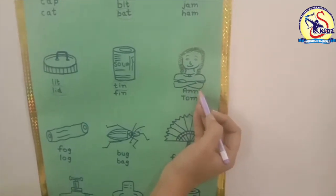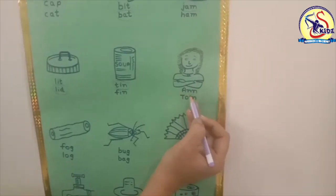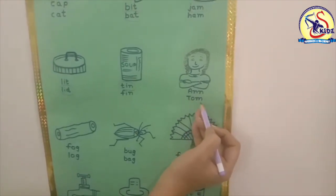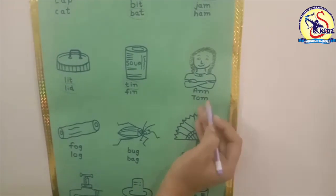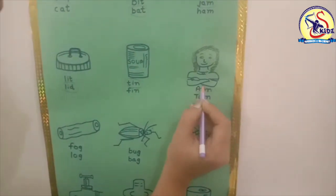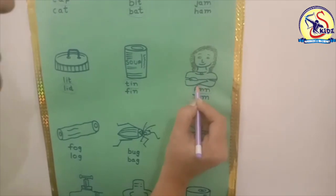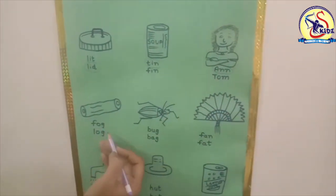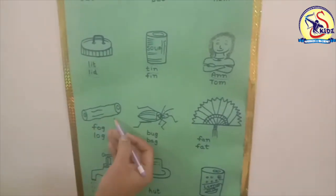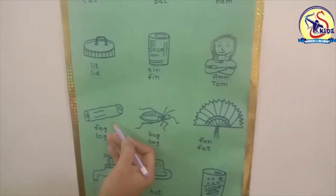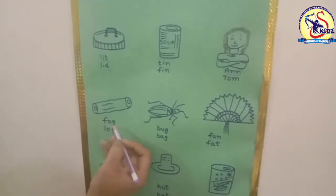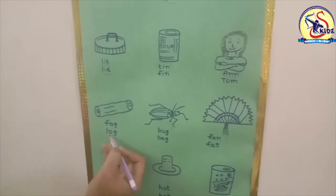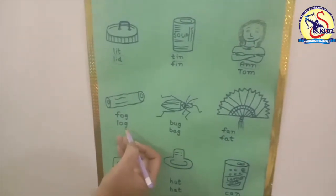Our next picture is a picture of a girl — A-N-N, ann, or T-O-M, tom. Yes, this is a picture of a girl and the name of the girl is Ann. Our next picture is a log — F-O-G, fog, or L-O-G, log.